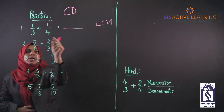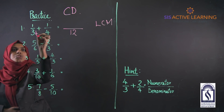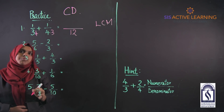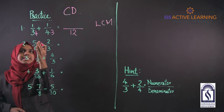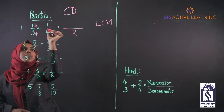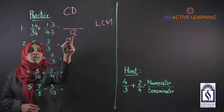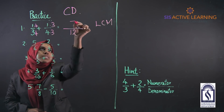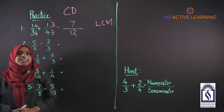The LCM of 3 and 4 is 12 — 3 × 4 = 12, and 4 × 3 = 12. These fractions are really 'selfish,' so we do the same multiplication in the numerator as well: multiply by 4 and by 3 respectively. Adding the numerators: 4 + 3 = 7, giving us 7/12 as the answer.